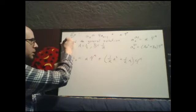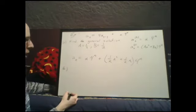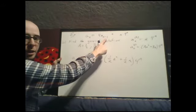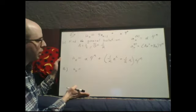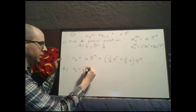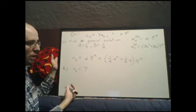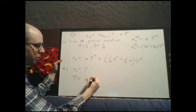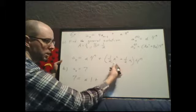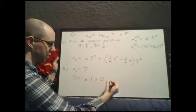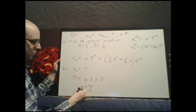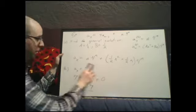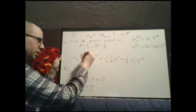For part b, with initial condition a_0 equals 7: plug in n equals 0 to the general solution. We get 7 equals alpha times 4 to the 0 plus 0, since every term in the particular part has an n factor. So alpha equals 7, and the unique solution is 7 times 4 to the n plus (one-half·n² plus one-half·n) times 4 to the n.